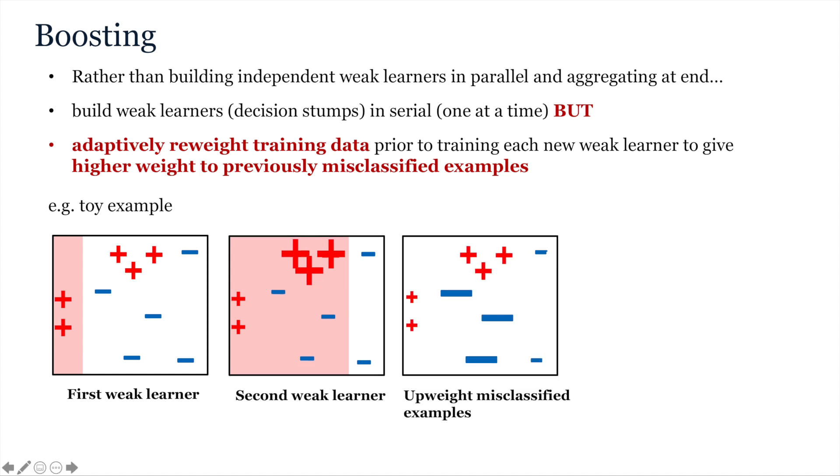Therefore, in the third and final round for this example, these minus class examples get up-weighted. And the red examples from the previous iteration remain partially up-weighted. And so the third base learner is encouraged to train a threshold which separates these examples correctly. Accordingly, it learns a threshold on the second feature.